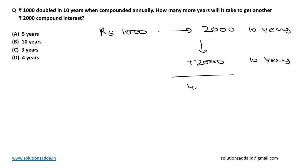Therefore, the final amount will become 4000 rupees. For that, it will take another 10 years as the amount is doubling every 10 years. Therefore, the correct answer for this question is option B, that is 10 years.